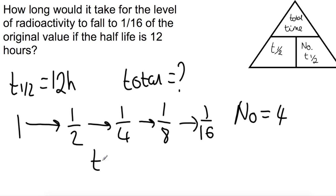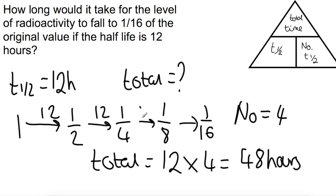So to work out our total time, we will do 12 times 4 equals 48 hours in total. And you can see that here, if you wanted to, you could write the half-life onto the arrows and then just add it up. So you go at 12, 12, 12, 12.